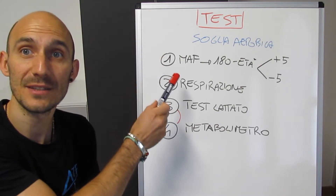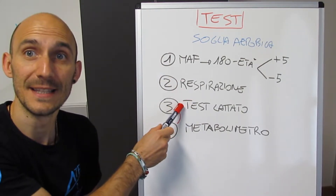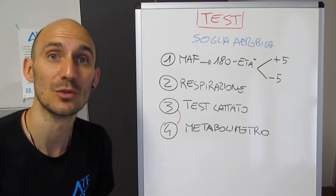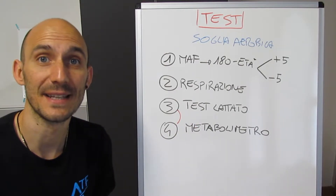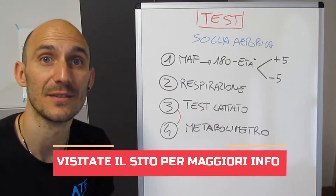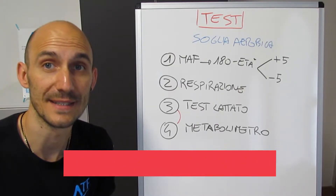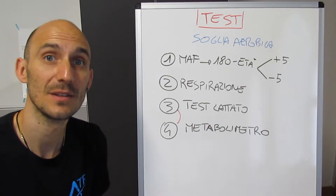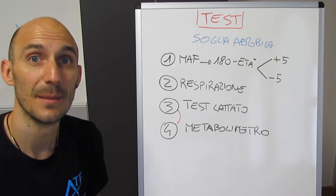I primi due test sono test da campo, mentre il terzo e il quarto, quindi quelli della trattamento a polimetro, sono dei test per cui servono dei macchinari particolari, quindi dovete rivolgervi a studi o laboratori che li utilizzano. I primi due invece li possiamo svolgere tranquillamente senza nessuna attrezzatura particolare.